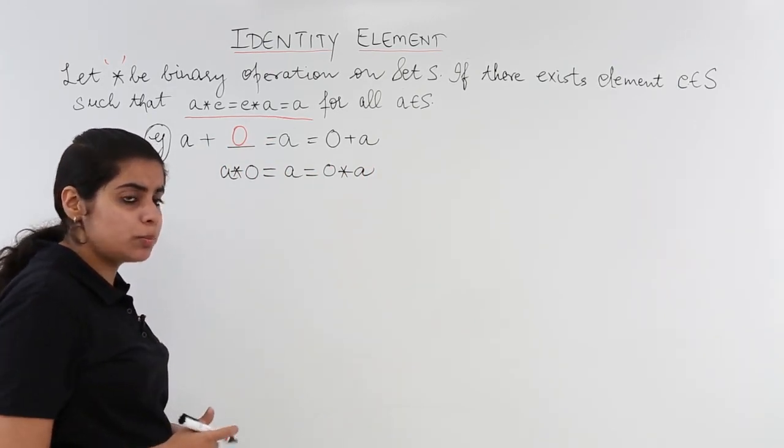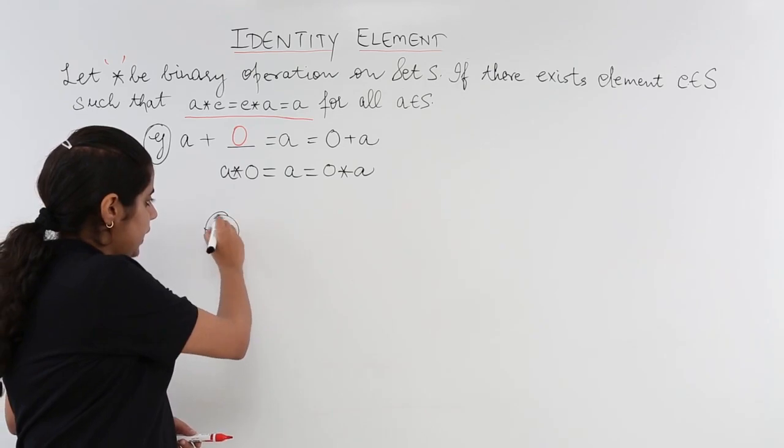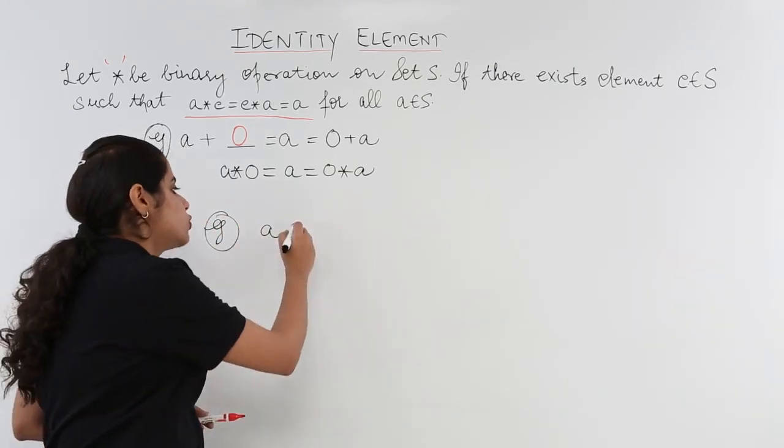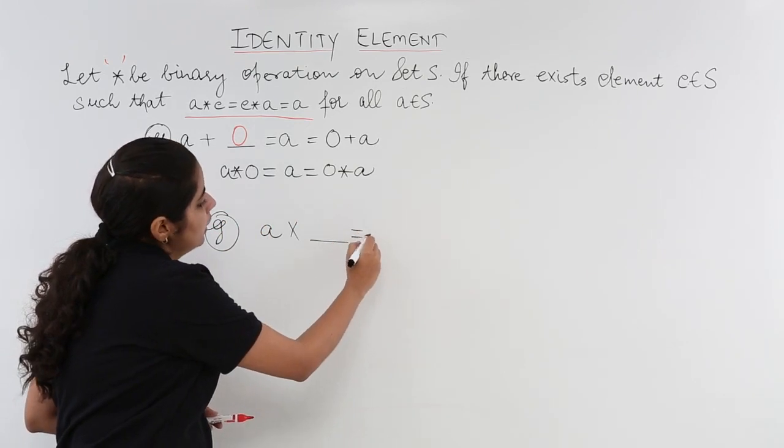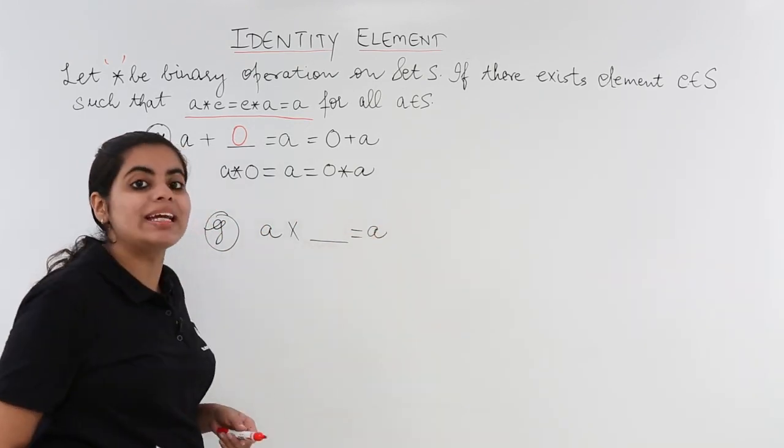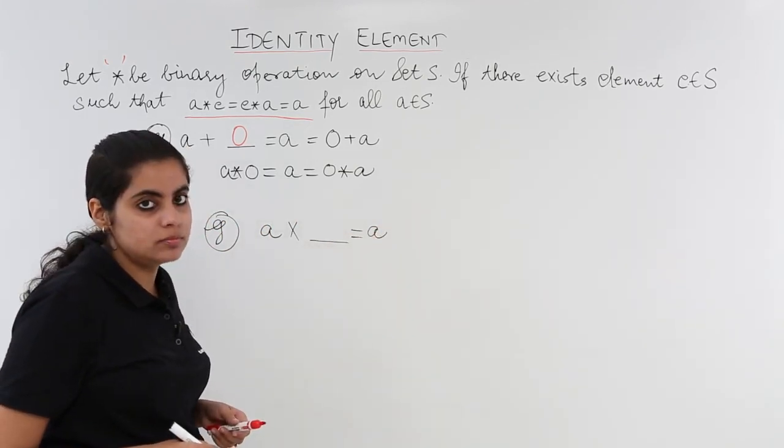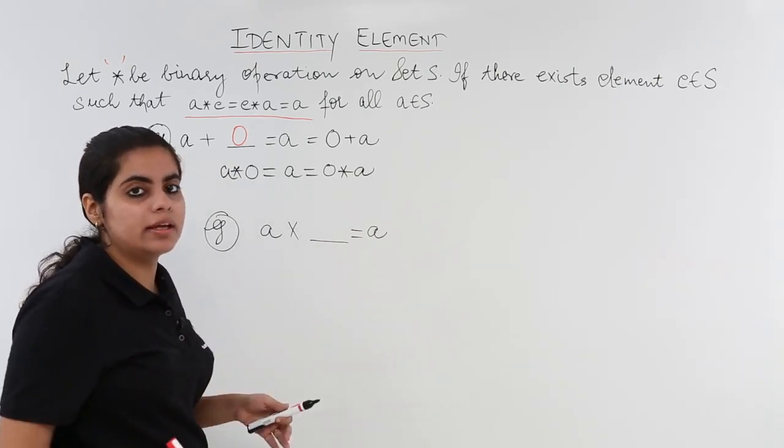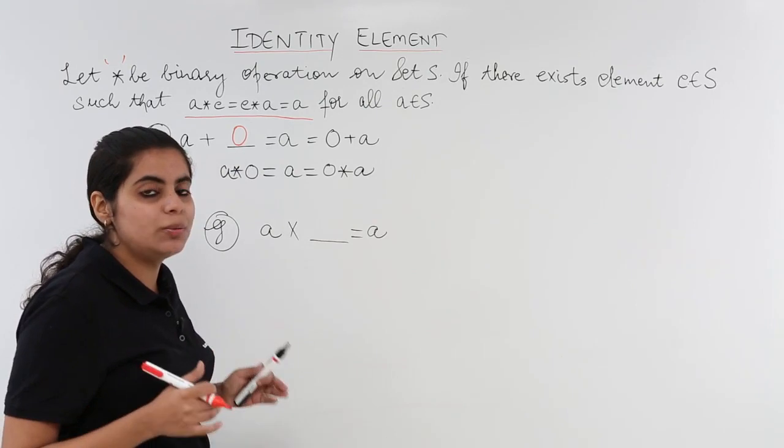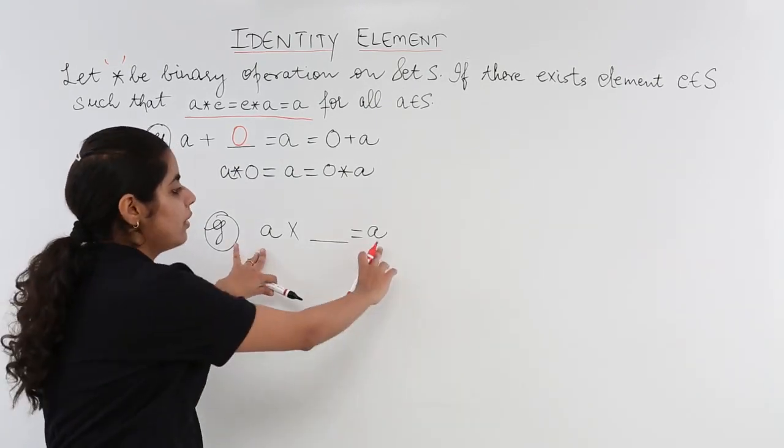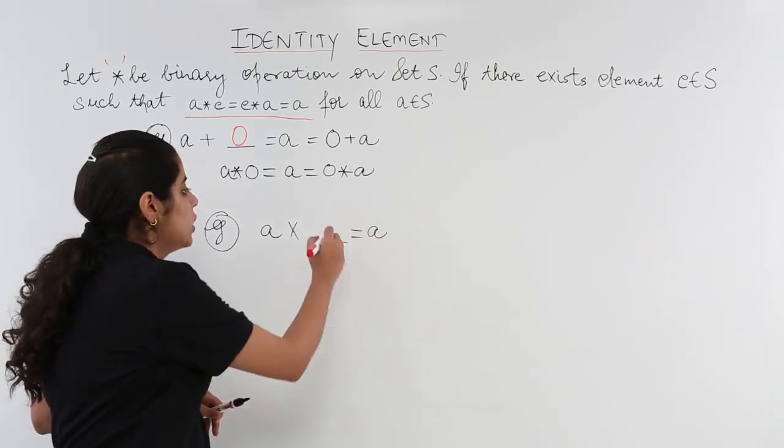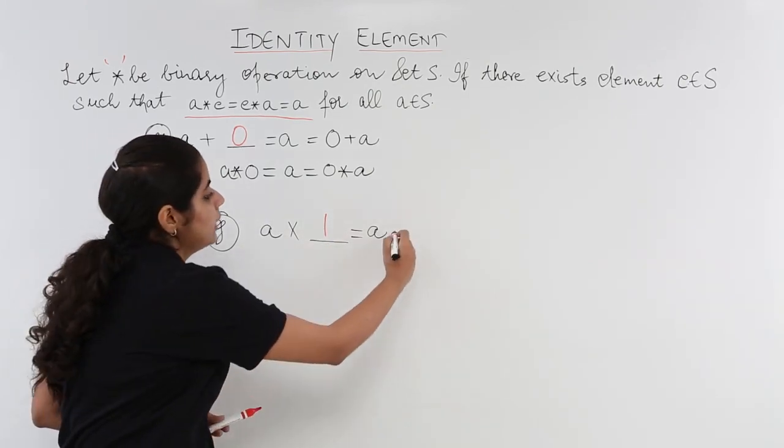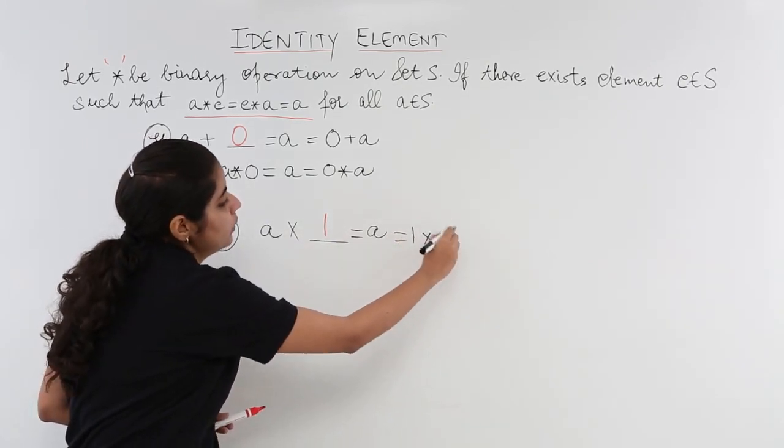Similarly another example would be what? I take up a and I want to find what should be multiplied with a to give me back a only. That means a has to be multiplied by what to give me a? I know two ones are two, three ones are three. If you want to have the same element all over again you need to multiply by one, which is ultimately equal to one into a only.